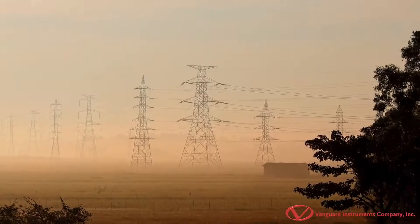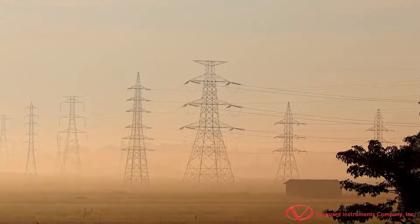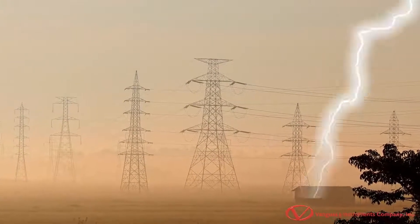During abnormal conditions, such as when lightning strikes a transmission tower, circuit breakers isolate the faulty components of the system to prevent additional damage.